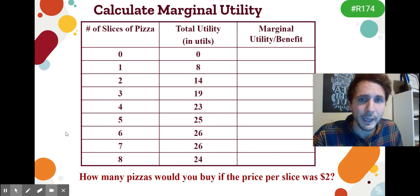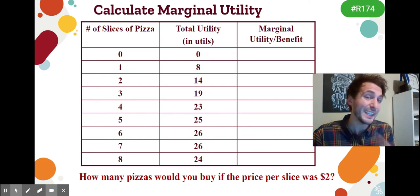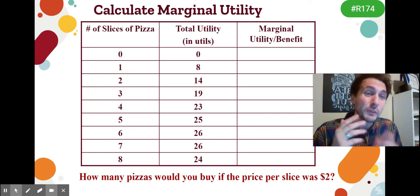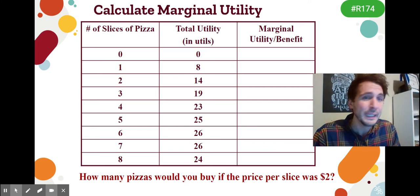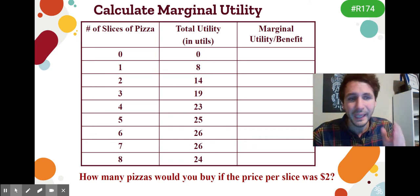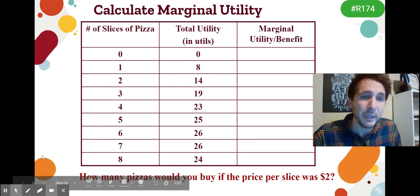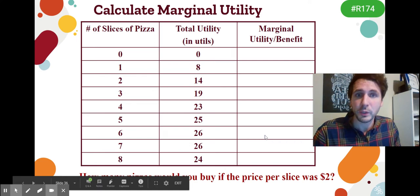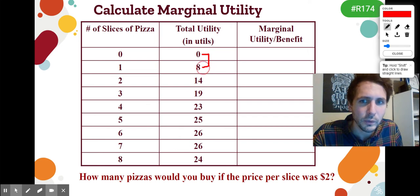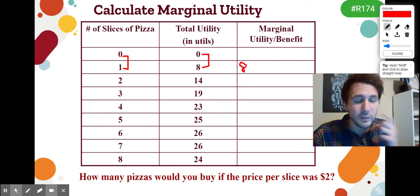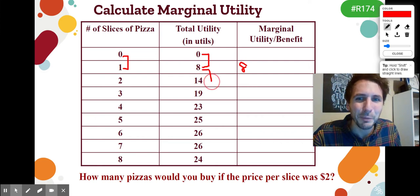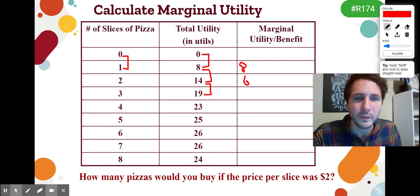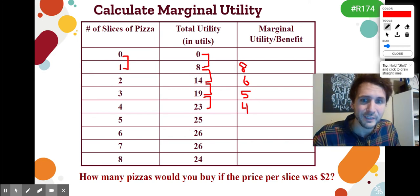We know that you'll continue to consume until marginal benefits equals marginal costs, as seen in concept 1.5. To calculate marginal utility, you simply take the change in total utility. To consume my first slice of pizza, I went from zero to eight — so I have eight additional utils from consuming my first piece. My second piece: I went from eight to 14, so I got six additional units of benefit. You'll see this number steadily decline as the law of diminishing returns kicks in with each additional slice.